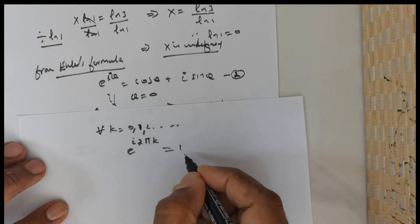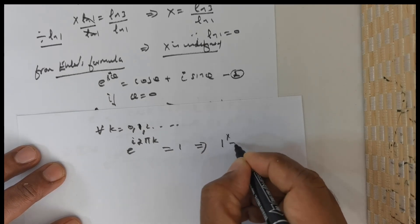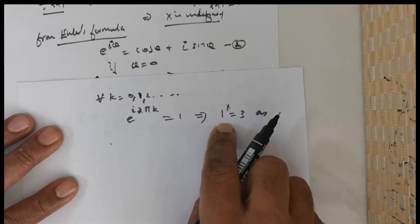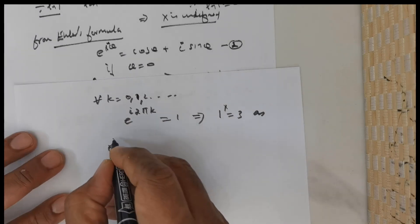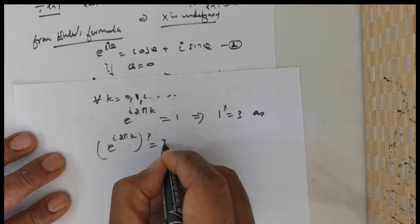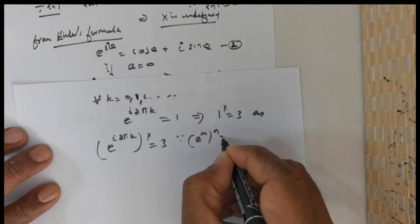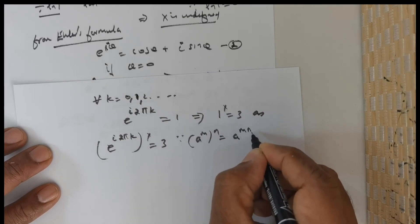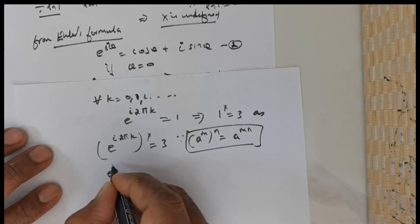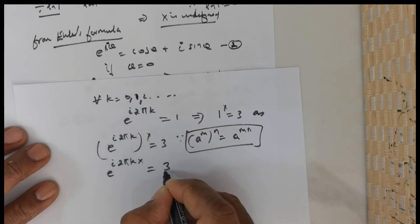So this would mean I can rewrite 1 raised to the power of x is equal to 3 as — in place of 1, I am going to substitute e raised to the power of i times 2 times pi times k — raised to the power of x is equal to 3. Since a raised to the power of m raised to the power of n can be combined, this is going to be e raised to the power of i times 2 times pi times k times x is equal to 3.